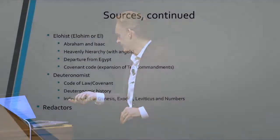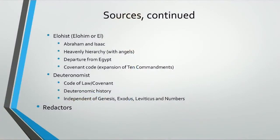There's the Elohist source. It contains the stories of Abraham and Isaac. It's concerned with a heavenly hierarchy that includes angels. It talks about the departure from Egypt. And it presents the Covenant Code — this idea that society, Israeli society, was predicated on a covenant with God. And that's laid out in a sequence of rules, some of which are the Ten Commandments, but many of which are much more extensive than that.